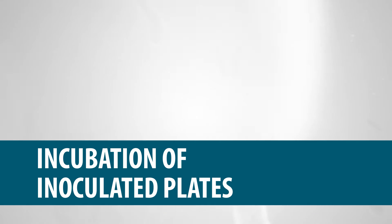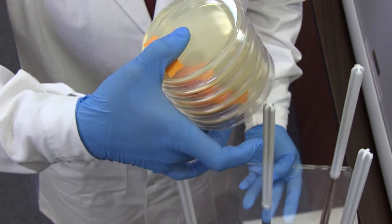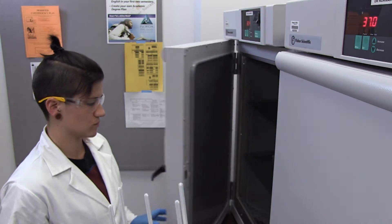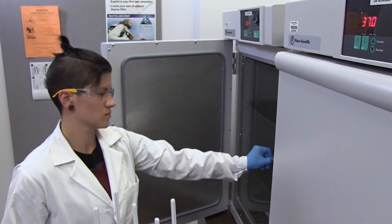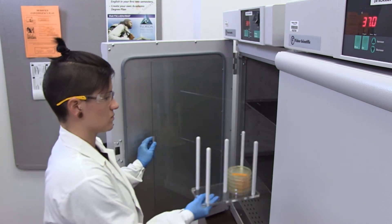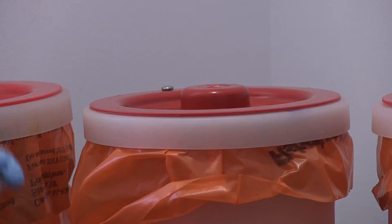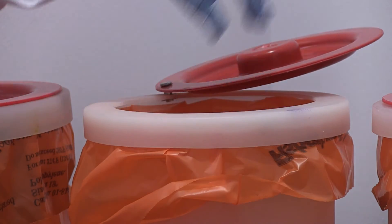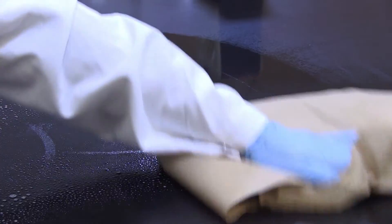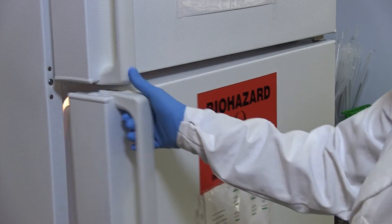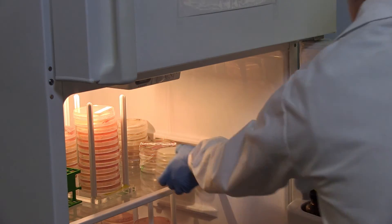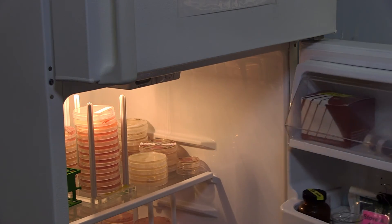Incubation of inoculated plates. Incubate the plates with the bottom up in an incubator at 37 degrees Celsius for 18 to 24 hours to allow the bacteria to grow to count colony forming later. Discard all contaminated tools and waste into a biohazardous container and disinfect the bench. The plates can be stored in a four degrees Celsius refrigerator after incubating until the next period.